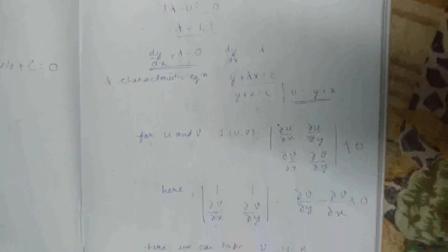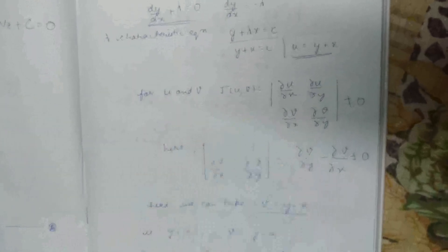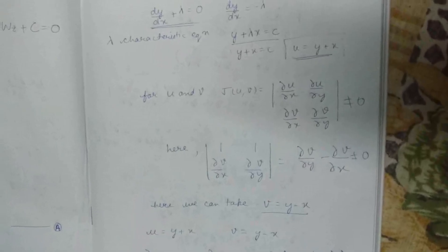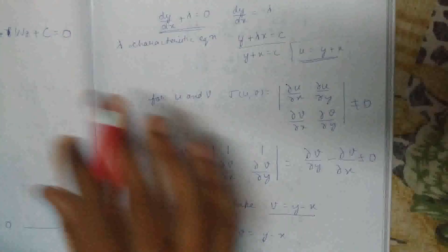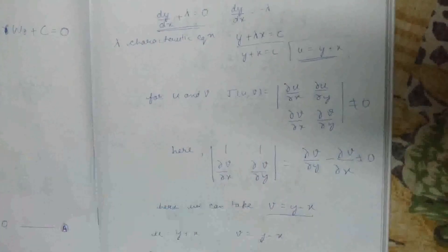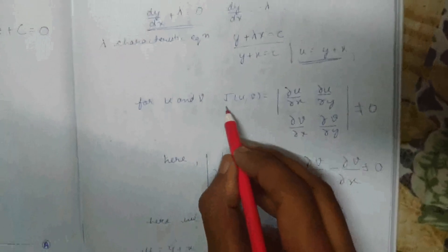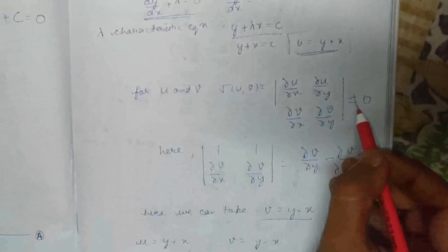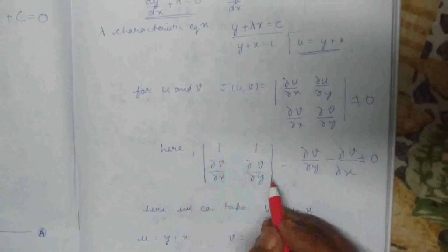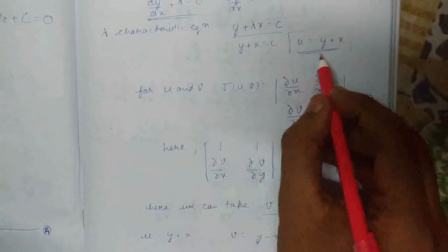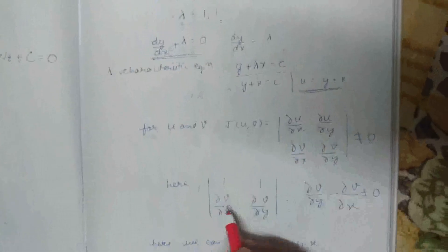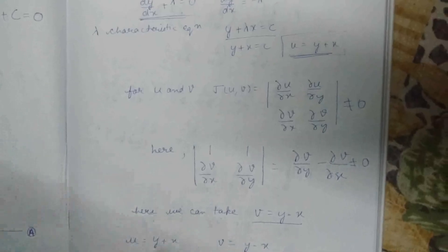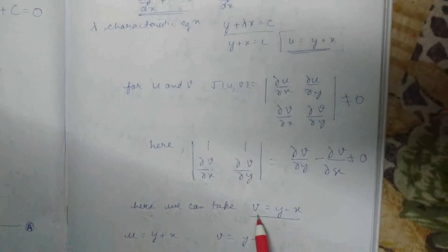Now I'm going to tell you another concept: U and V are two transformations, two functions which are going to help us transform this PDE. We have to find the Jacobian of U and V with respect to X and Y, and this should not equal zero. We've already found the value of U, and we have to find something similar to U but not equal to U. So here we can take V equals Y minus X.